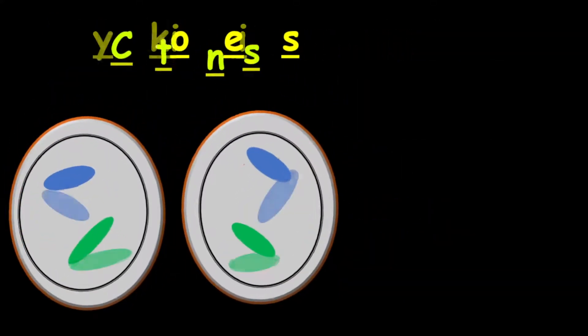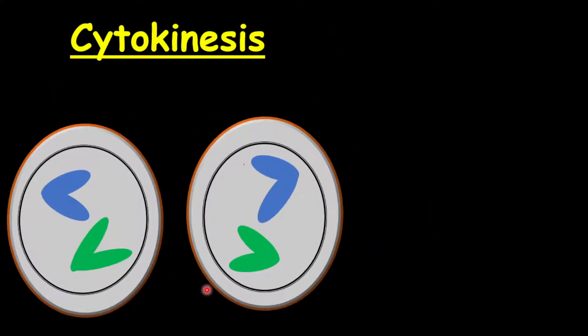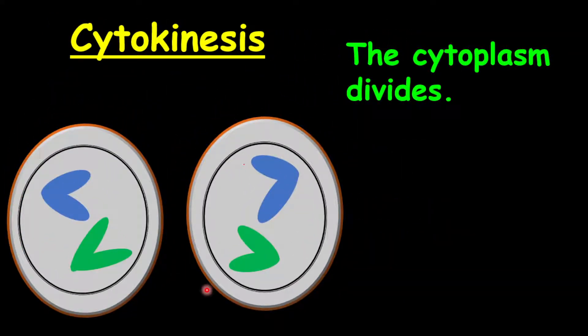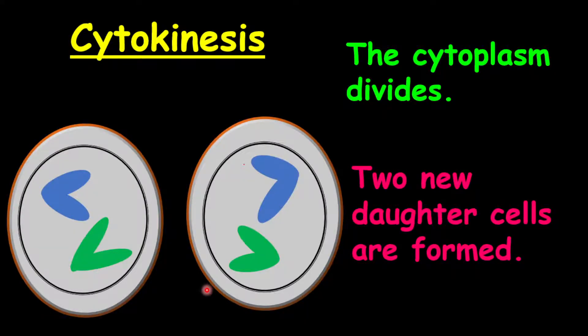After the telophase, you'll have cytokinesis. And cytokinesis is when the cytoplasm divides, resulting into two daughter cells. And these two daughter cells have the same number of chromosomes as the parent cell.